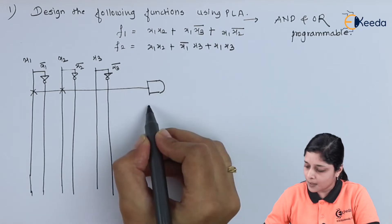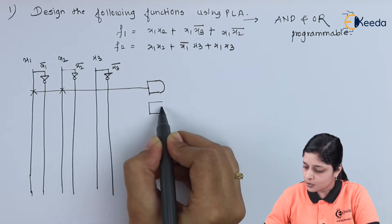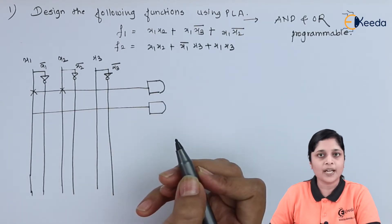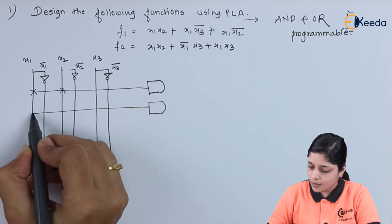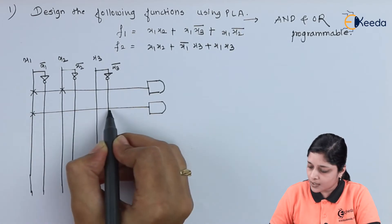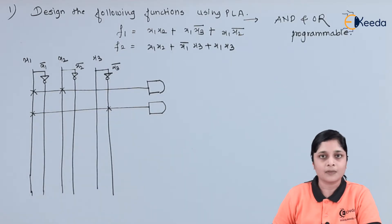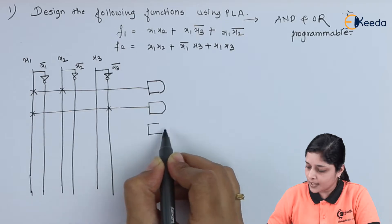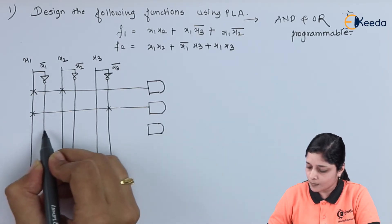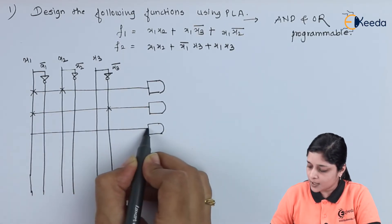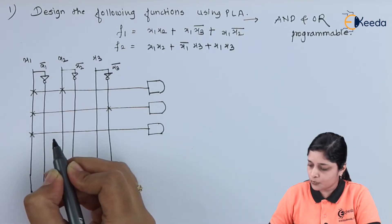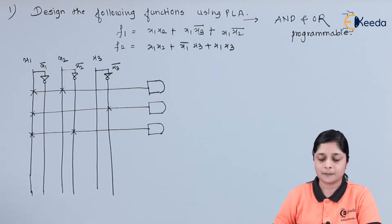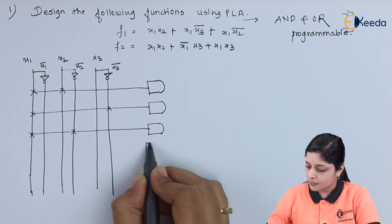Next term is x1 x3 bar, so again we will draw one more AND gate. We will make a cross over x1 and x3 bar. After that we have x1 x2 bar, so in this way we can make x1 and then x2 bar.